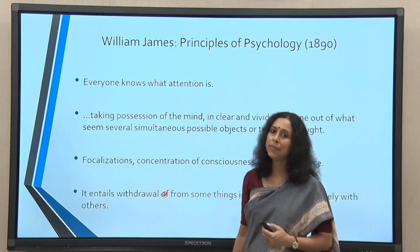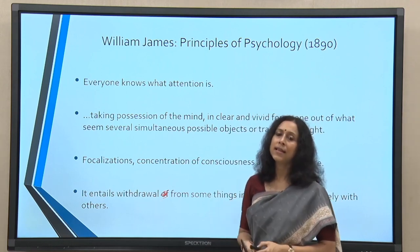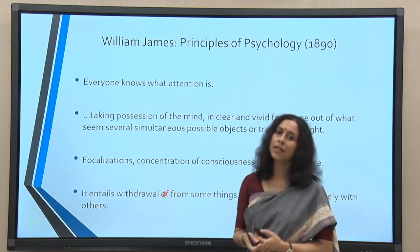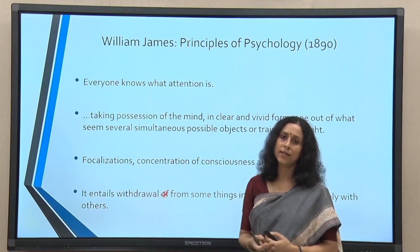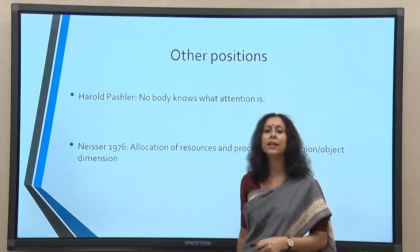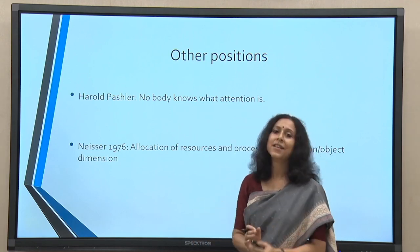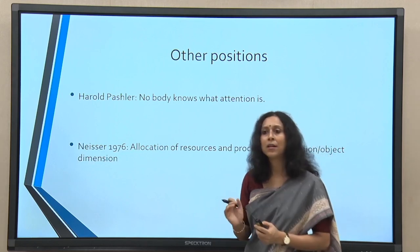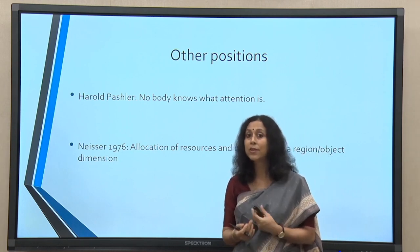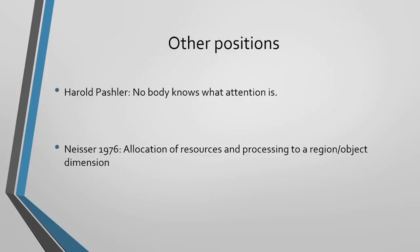However, it has not really been that simple. Even though Wundt and William James talk about attention as if it is well known, that is actually where the paradox lies — because we all think we know what attention is, we have not been giving enough attention to its various aspects. Harold Paschler later says 'nobody knows what attention is.' Niser in 1976 talks about attention in terms of allocation of resources and processing to a particular region or object. We know what it does, rather than what it is — that is where the theoretical problems are.